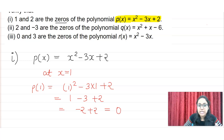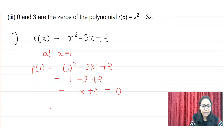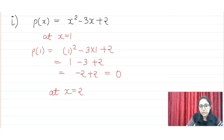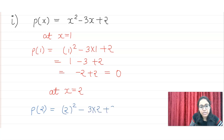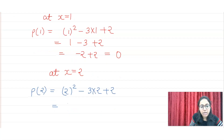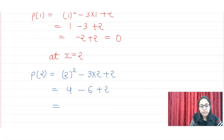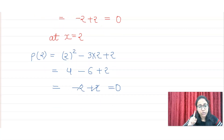So we can conclude that P(1) = 0. Now let's see at x = 2. P(2) = 2² - 3 × 2 + 2, so we get 4 - 6 + 2, which gives -2 + 2, and we will get 0. So when x = 1 and when x = 2, we get 0.